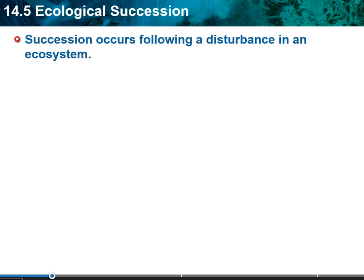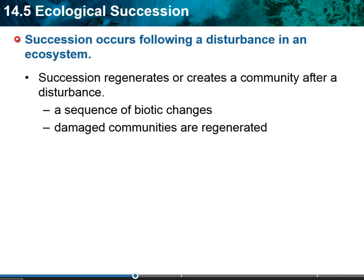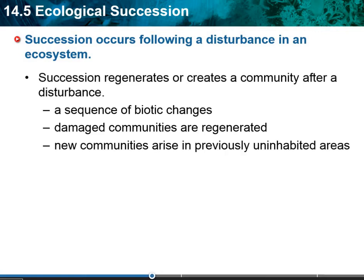Succession occurs following a disturbance in an ecosystem. It's going to regenerate or create a community after a disturbance. These disturbances can be man-made or natural, like a natural disaster. It's going to be a sequence of biotic change — only living things are going to allow for succession to occur. Damaged communities need to be regenerated, and new communities can arise in previously uninhabited areas.